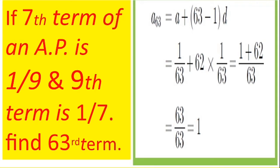So that is how the shortcut came. The answer is 1. So A63 equal to A plus 62D. Once we solve it, the 63rd term equals 1. Shall we go to the next question? Are you clear with this?